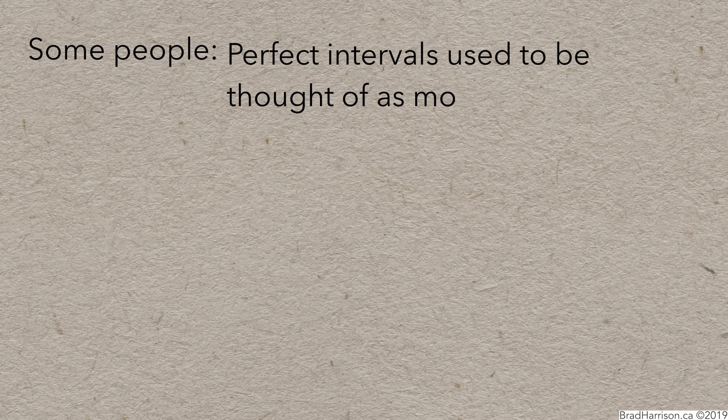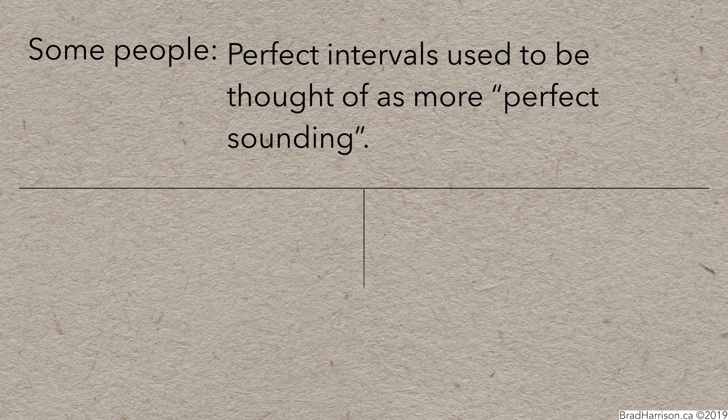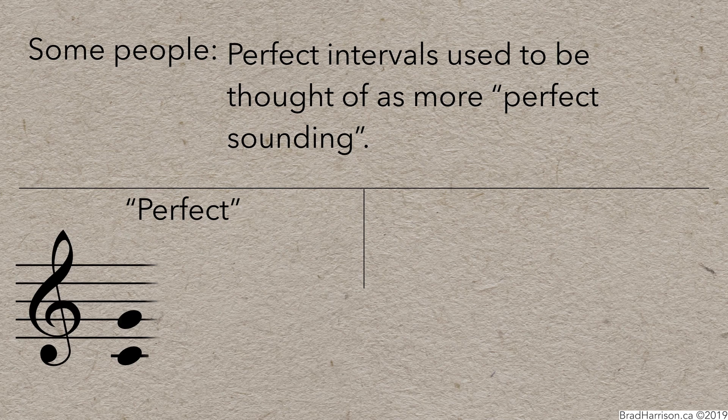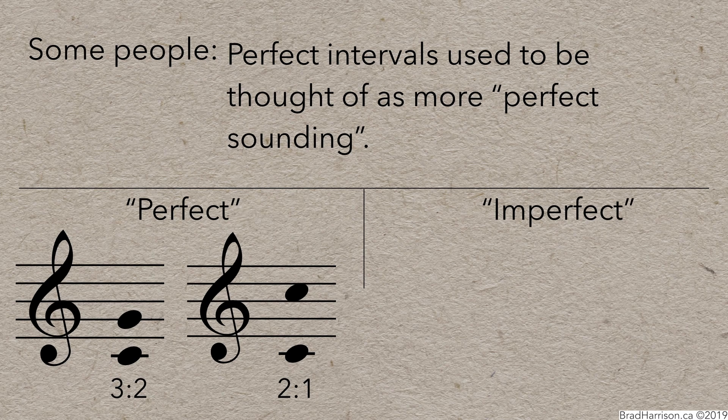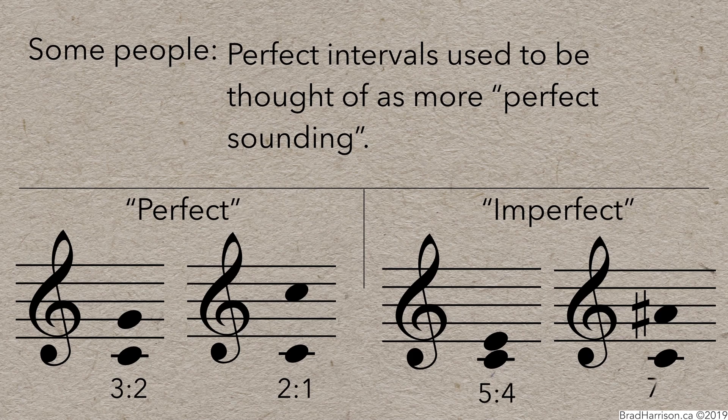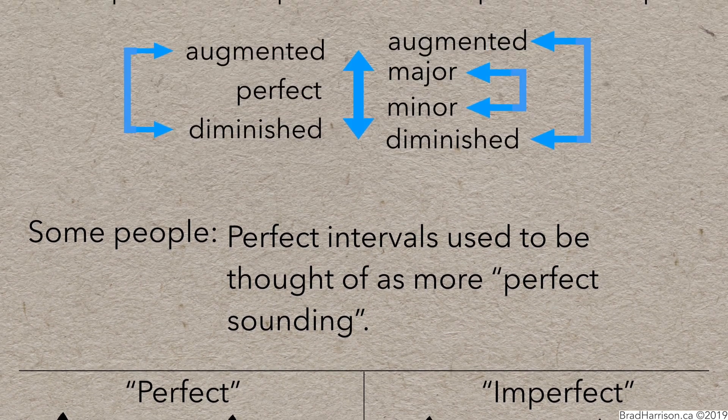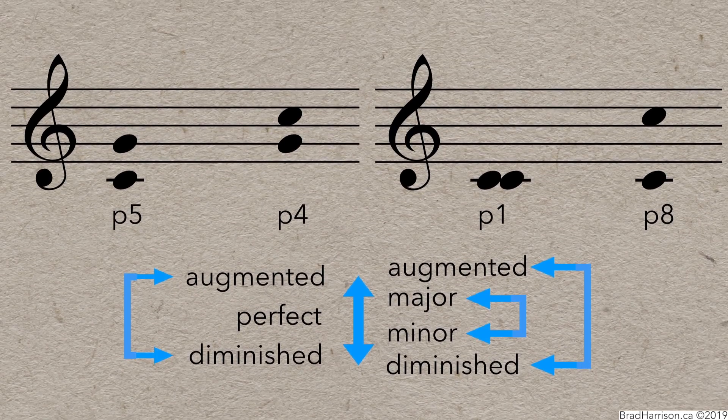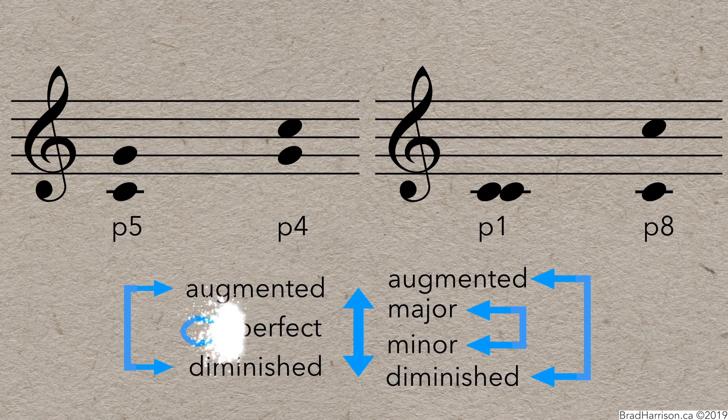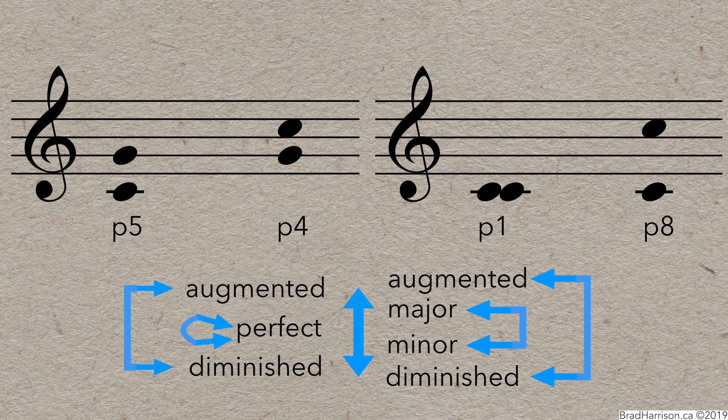Some people will tell you that the perfect intervals are so named because they used to be thought of as more perfect sounding. Or, you'll hear some convoluted explanation about the ratios of the frequencies of the notes in perfect vs. non-perfect intervals, but that's all crazy talk. Believe it if you like, because it doesn't really matter to your understanding of music theory. But, this is a way better explanation. Perfect intervals are perfect because they remain perfect when they're inverted.